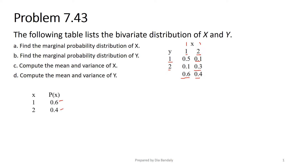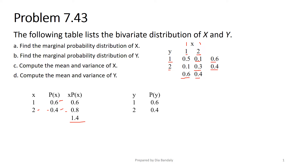Now we need to find the marginal probability for y. We add up the rows: 0.5 plus 0.1 is 0.6, and then 0.1 plus 0.3 is 0.4. I'm putting them separately because in parts C and D I need to compute the mean and variance. In table format it's much easier. Remember, mean is the sum of x times P of x. So we add a column x times P of x: 1 times 0.6 is 0.6, 2 times 0.4 is 0.8. Summing these, the mean is 1.4.